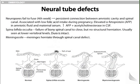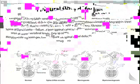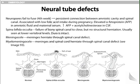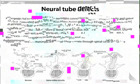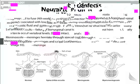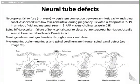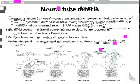Meningocele: 'cele' means cavity, 'meningo' means meninges — therefore, in meningocele, the meninges herniate through a spinal canal defect. Myelomeningocele: 'myel' refers to spinal cord, 'meningo' means meninges, 'cele' means cavity — therefore, in myelomeningocele, both the meninges and spinal cord herniate through the spinal canal defect. Looking at the illustration: normal anatomy shows dura mater, meninges, and spinal cord with transverse processes moving from anterior to posterior. Spina bifida occulta shows structural abnormalities with no herniation. Meningocele shows the meninges herniating. Myelomeningocele involves not just the meninges but also the spinal cord.